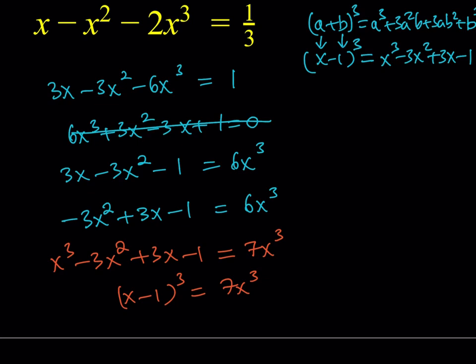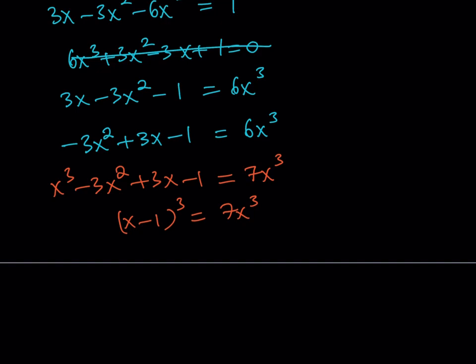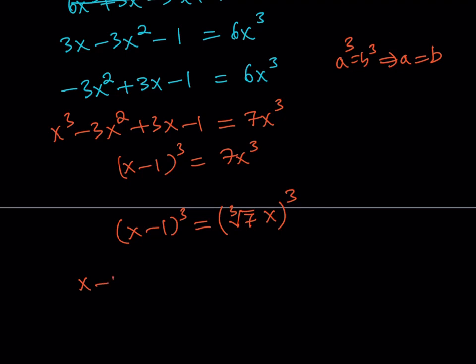Now, what am I going to do next? Well, I have something cubed on the left-hand side, and on the right-hand side, I have the same thing, or something similar. How do you write it? We can write the 7x cubed as the cube of something. We can write it as the cube root of 7 multiplied by x quantity cubed. There you go. So, I got it. Well, if a cubed equals b cubed, what is that supposed to mean? If a cubed equals b cubed, that always implies a equals b. There's no other way because 3 is an odd number. So, this implies that x minus 1 is equal to the cube root of 7 multiplied by x.